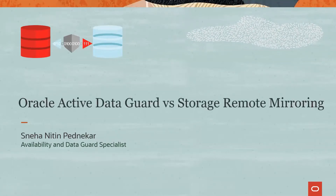Data replication is the process of copying data from one location to another to ensure data availability and disaster recovery. Oracle Active Data Guard and Storage Remote Mirroring are two common data replication solutions used in enterprise environments. This video provides a quick brief as to why Oracle Active Data Guard is preferred to traditional storage disaster recovery technologies.